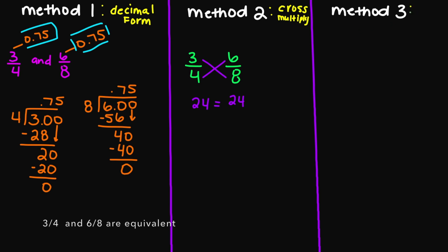The third method you can use to see if your fractions are equivalent is to use the cancellation property. When you're doing this, all you're doing is simplifying your fraction to its lowest terms to make sure that you do get the same fraction on both sides. So let's go back to the same example, three over four and six over eight.